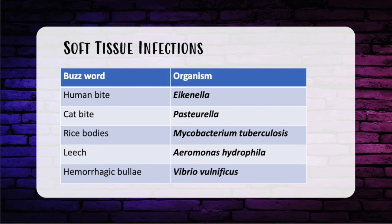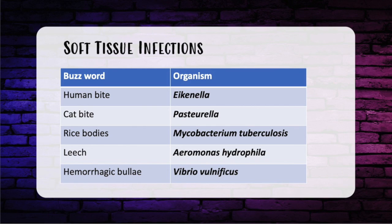Human bite, altercation, fight bite — Eikenella. Cat bite — Pasteurella. Rice body — Mycobacterium tuberculosis. Leeches — Aeromonas hydrophila. For prophylactic antibiotics before leech therapy: fluoroquinolones, tetracycline, or Bactrim. If it's a child after a finger replant and you can't give those antibiotics — third-generation cephalosporin.